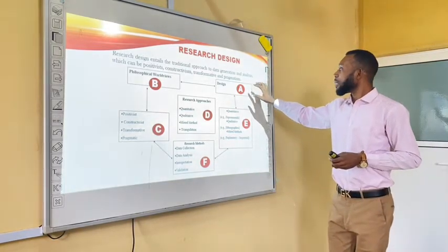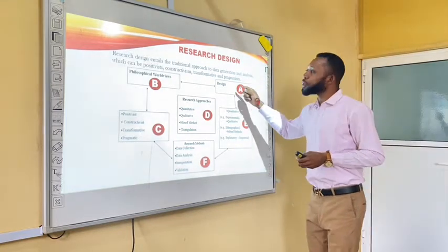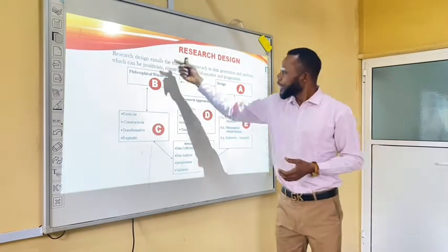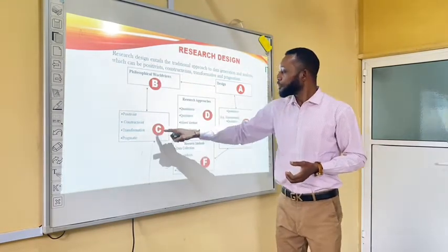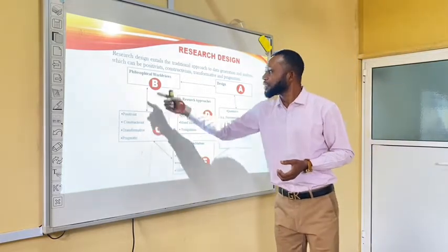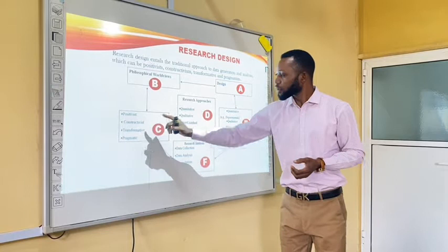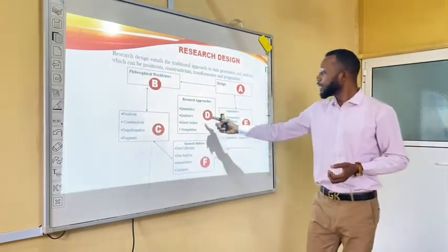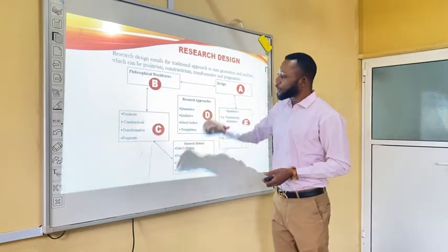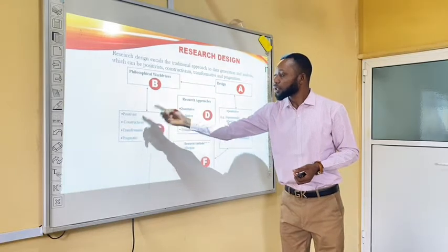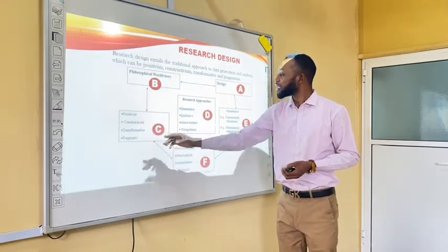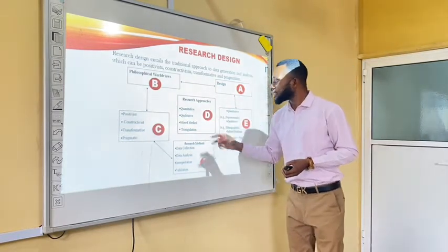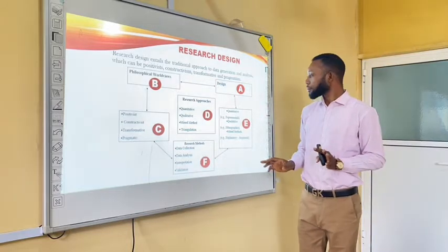So here we have research design — A. Research design will inform the choice of B, which is the worldview or the paradigm. Based on this worldview, we inform the choice of C, which is whether the research is taken from the positivist, constructivist, transformative, or pragmatism perspective. C will lead to D, meaning it is based on these four parameters — positivist, constructivism, transformative, and pragmatism — that we inform the choice of whether you are going to adopt quantitative, qualitative, mixed method, or triangulation.